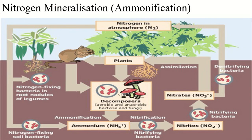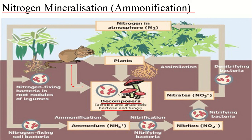The next step is nitrogen mineralization, also known as ammonification. When an organism excretes waste or dies, decomposers like bacteria and fungi decompose the tissue and release inorganic nitrogen back into the ecosystem as ammonia. So while in the first step ammonia was produced, and in the second step it was incorporated into the food chain, in this third step — ammonification — ammonia is returned back into the ecosystem from the food chain or food web.